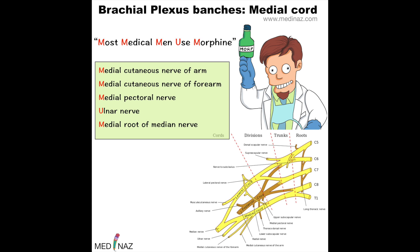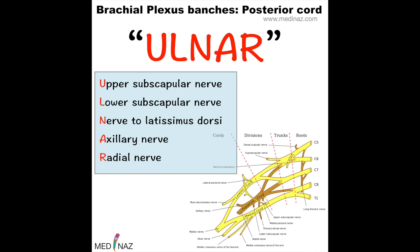The mnemonic for medial chord branches is 'most medical men use morphine.' Follow the regulators: M for medial cutaneous nerve of arm, then medial cutaneous nerve of forearm, then medial pectoral nerve, then ulnar nerve, and then M for medial root of median nerve.